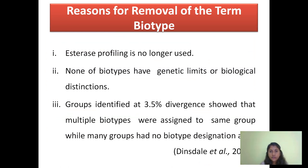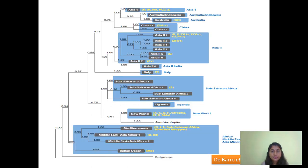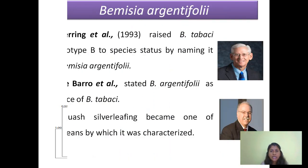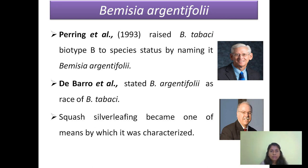The term biotype has been removed because esterase-based stress profiling is no longer used. Now everyone is using the mitochondrial cytochrome oxidase gene to differentiate these biotypes. These biotypes also have no genetic limits. Groups identified at 3.5% divergence showed that multiple biotypes were assigned to the same group, but many groups had no biotype designation at all. For example, the Mediterranean, New World, and Asia 2.1 groups are associated with multiple biotypes, while Sub-Saharan Africa 4, Sub-Saharan Africa 3, and Asia 2.8 are associated with no biotypes. Based on these inferences, the term biotype has been removed.